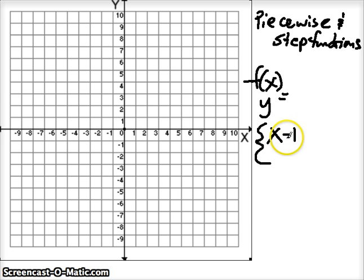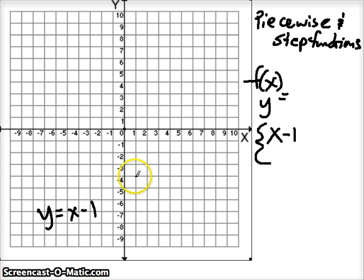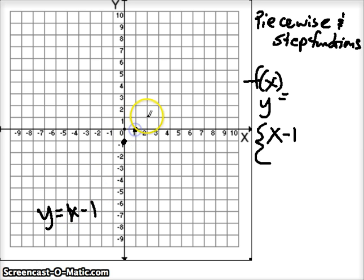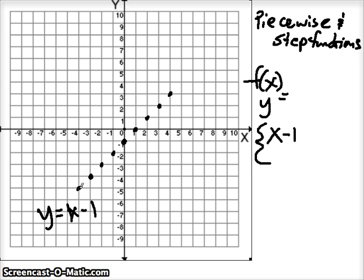We know how to graph y = x - 1. We start at negative one — that y-intercept. And we use our slope, which is that invisible one in front of the x, to plot other points on our graph. When doing piecewise or step functions, it's always best to give a really good representation of that line, something that really takes up the majority of the graph.